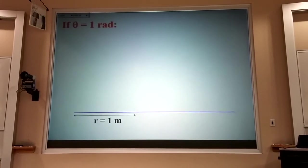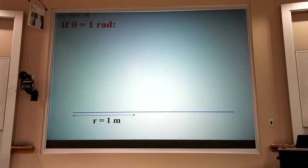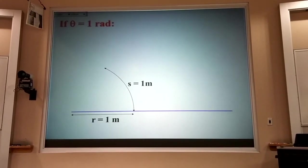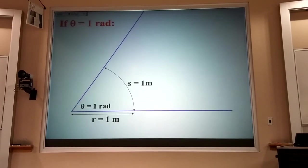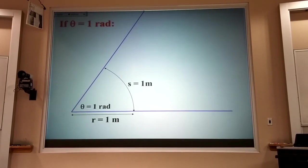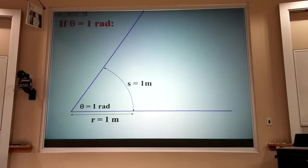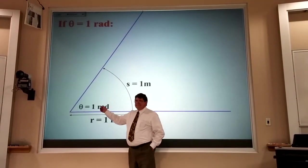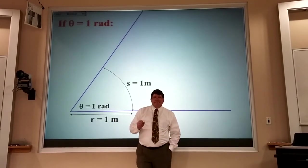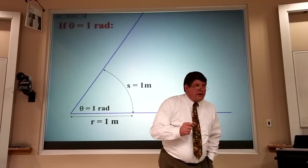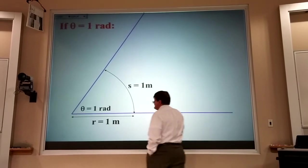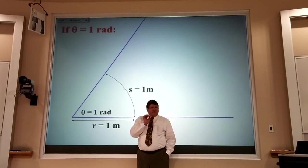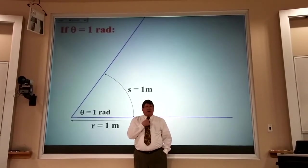Now, one radian I could find by going out one meter and making an arc length of one meter. And that would be one over one, or one radian. How many degrees would that be, one radian? Anyone know? 45. I'm sorry? 45. 45? Nope. Turns out it's a little less than 60. It's 57. And here's how I remember it.